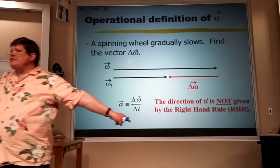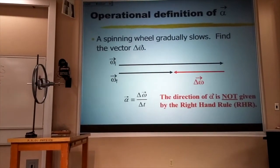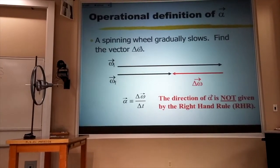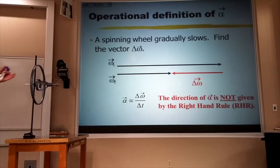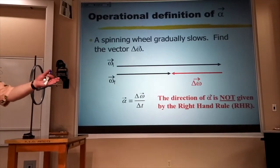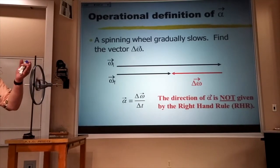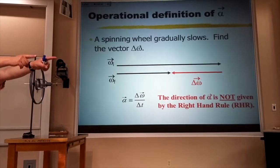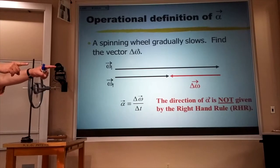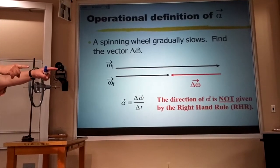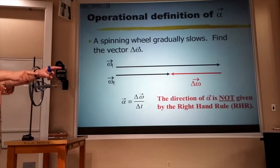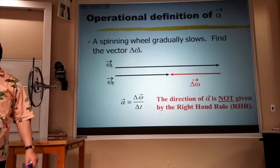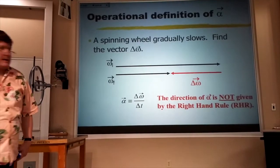Does this seem familiar? Have we been here before? Yeah — you're going down a straight road: if you're hitting the gas and going faster and faster, velocity and acceleration are in the same direction. If you hit the brakes, they're in the opposite direction.